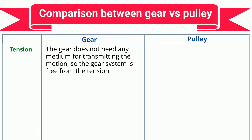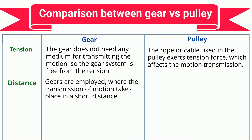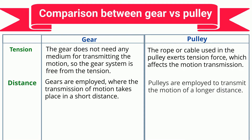Tension: The gear does not need any medium for transmitting motion, so the gear system is free from tension. The rope or cable used in the pulley exerts tension force, which affects motion transmission. Distance: Gears are employed where transmission of motion takes place over a short distance, while pulleys are employed to transmit motion over a longer distance.